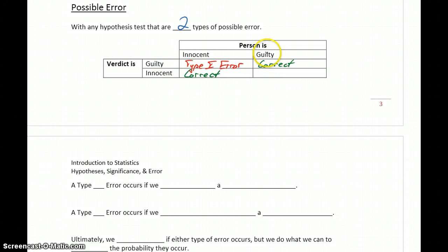We could also be wrong if a guilty person is let go, so if that verdict comes back as innocent. We would refer to that as a Type II error.